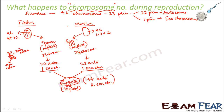The zygote that is formed contains half the chromosomes from the father and half from the mother. So for each trait — say hair color — if the father's hair color is black and the mother's is brown, the zygote will have one chromosome with a gene saying hair color should be brown, and another chromosome with a gene saying hair color should be black. What decides whether the kid will have brown hair, black hair, or even a different color? That is exactly what we will see in this lesson.